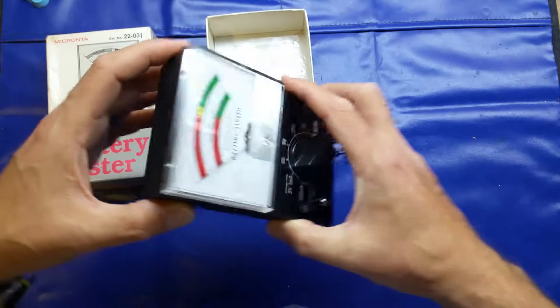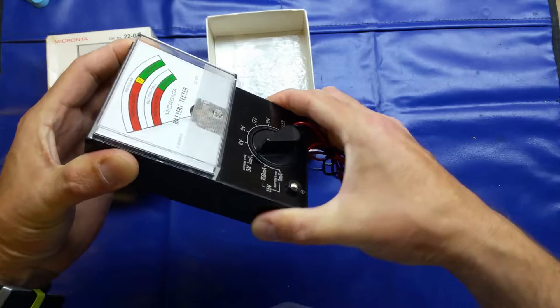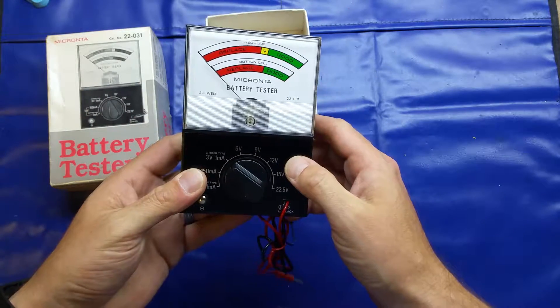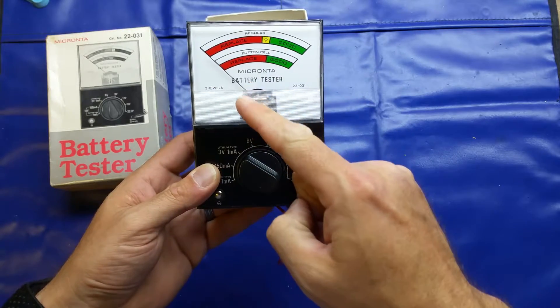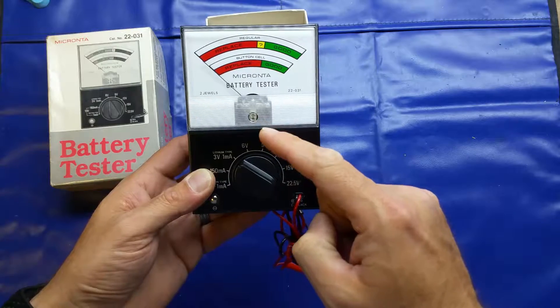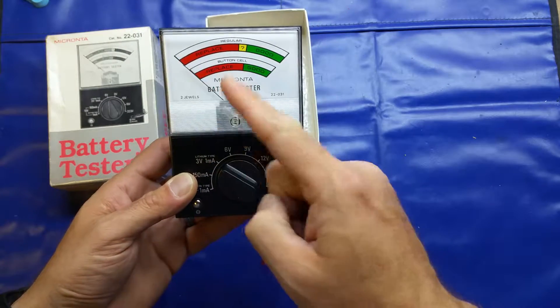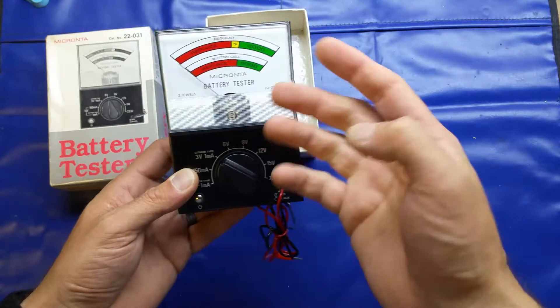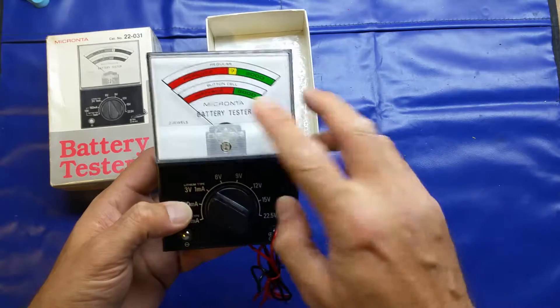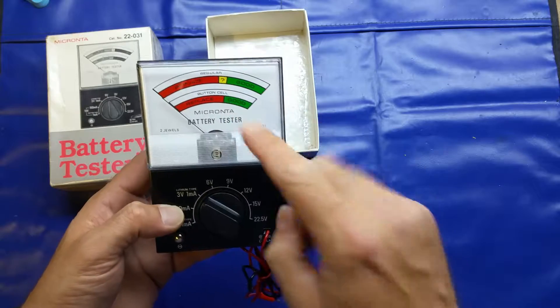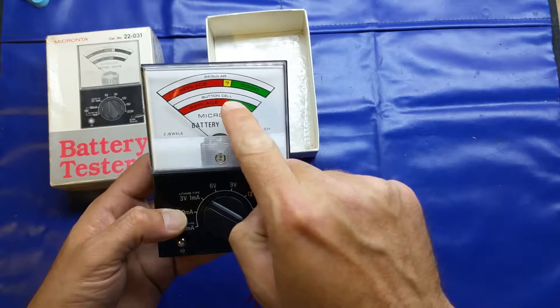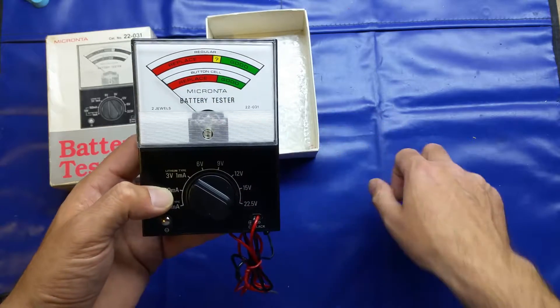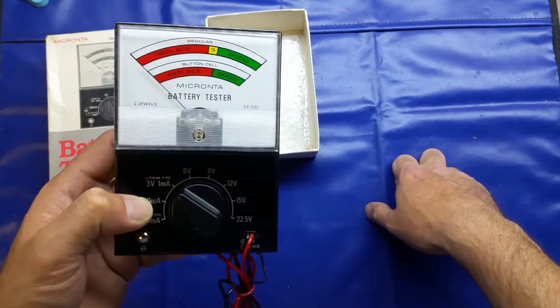If anybody's ever come across a 22.5 volt battery, please leave a little note in the comments. It tests batteries under actual load conditions, like I was just saying, and special settings for button and lithium batteries. Easy to read battery condition indicator scale. Let's go ahead and have a look at it. It doesn't look like it's actually been used. It's still got the original cable tie and there is absolutely zero marks on here. It's in really nice condition.